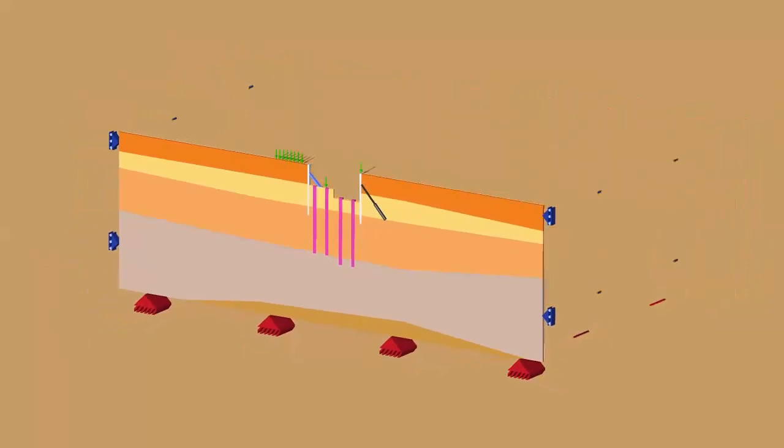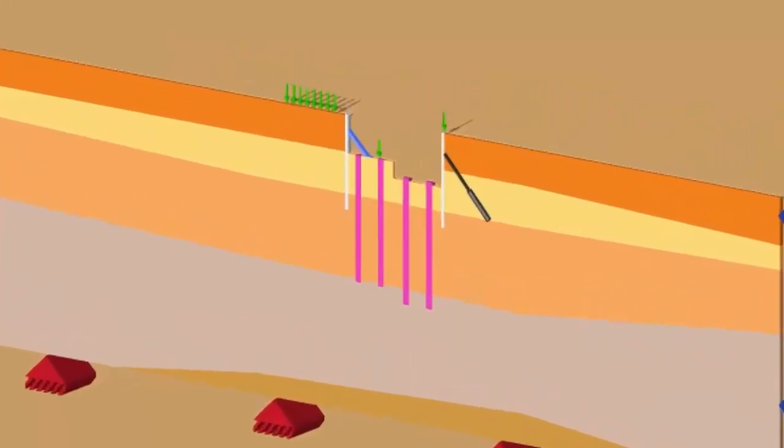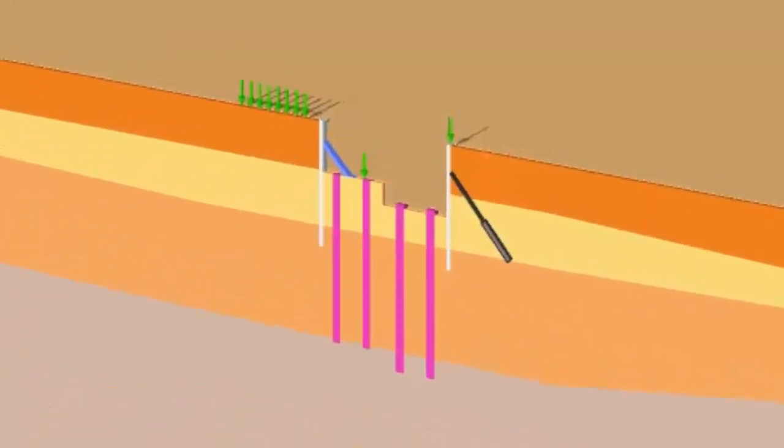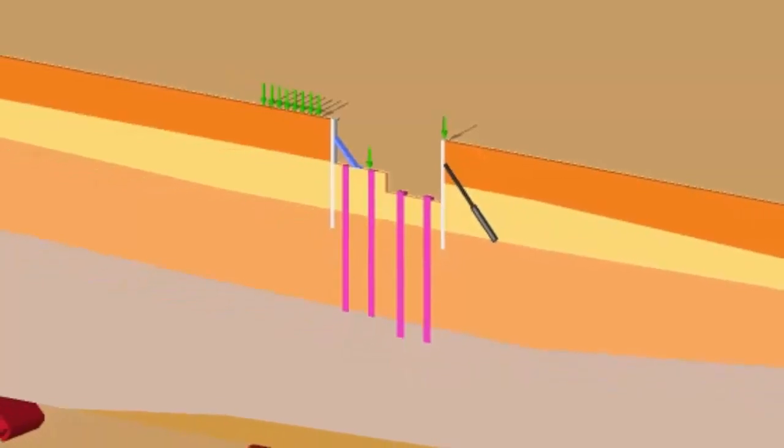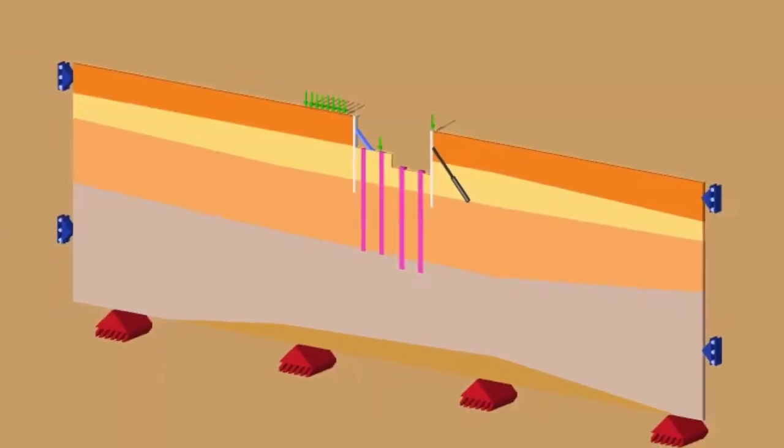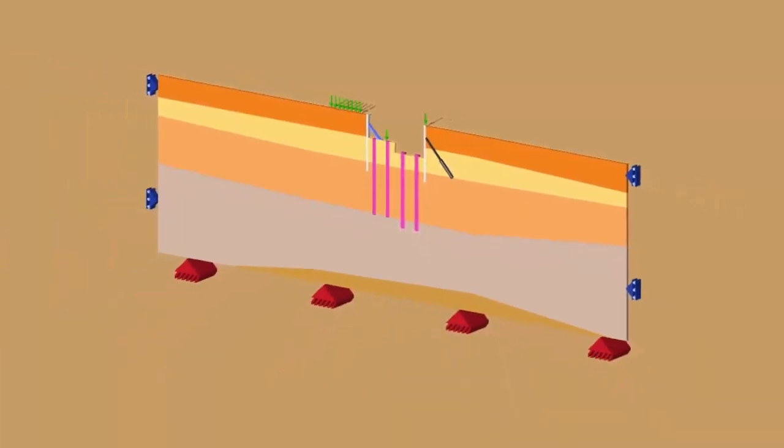It's got everything there: the basement walls, the step in the basement floor, the inclined strut, the ground anchors, the bearing piles, the point load and the line load as well as the approximately horizontal ground strata.